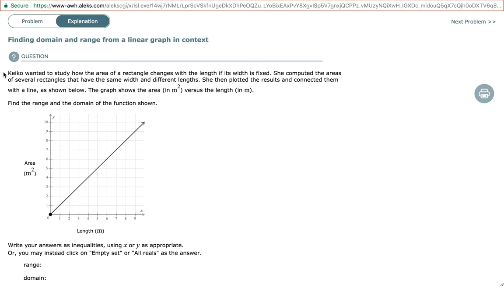So let's read the problem. Keiko wanted to study how the area of a rectangle changes with the length if its width is fixed. She computed the areas of several rectangles that have the same width and different lengths. She then plotted the results and connected them with a line as shown below. The graph shows the area in square meters versus the length in meters.